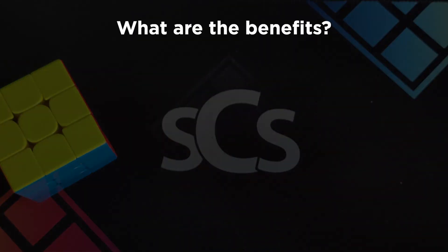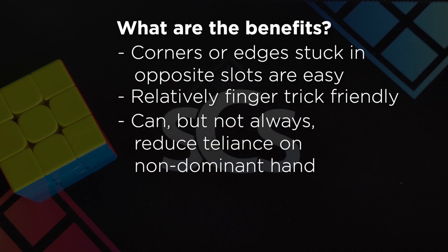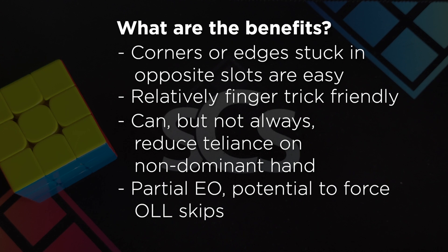So what are the benefits of F2 Gen F'? If you have edges or corner pieces, or both, stuck in F2L slots, you can use F2 Gen F' to solve it, usually relatively easily, rather than taking out a corner and edge, and then inserting it. It's relatively finger-trick friendly, as a lot of the time you set up basic cases with the edges oriented, meaning solvable with R, L, U, and D moves. Sometimes it can reduce the reliance on moves with the non-dominant hand, but not always.